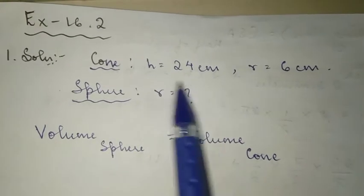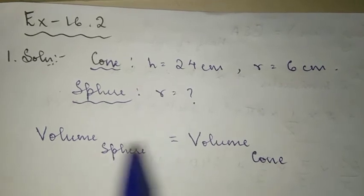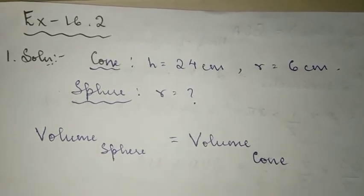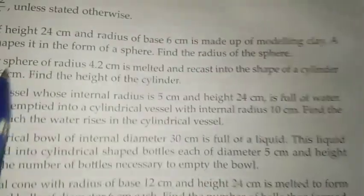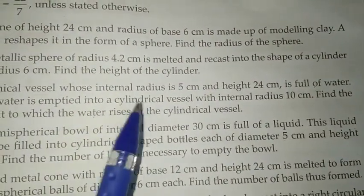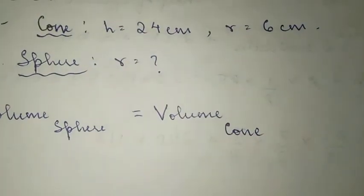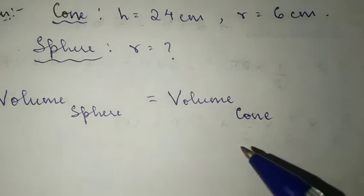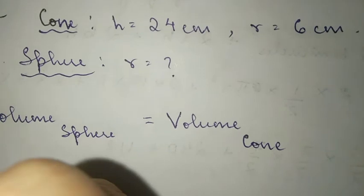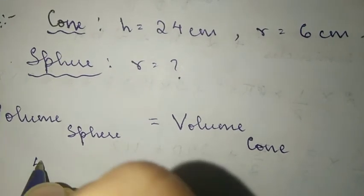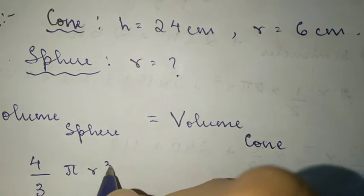The volume of the sphere is equal to the volume of the cone. The volume of the sphere is equal to the volume of the cone formula. The volume of the sphere is equal to 4 by 3 pi r cubed.